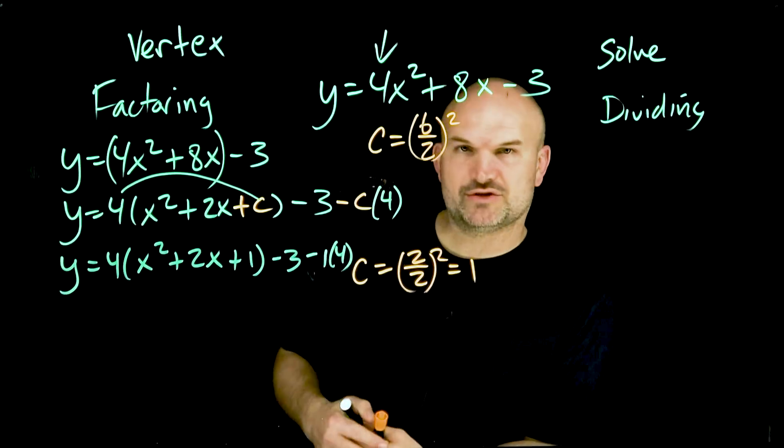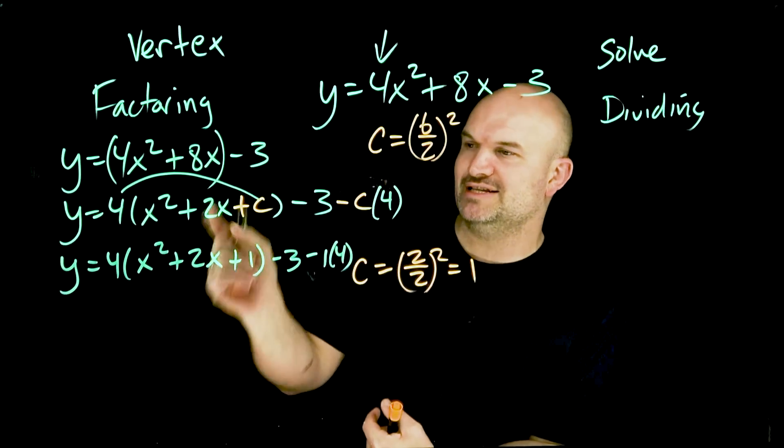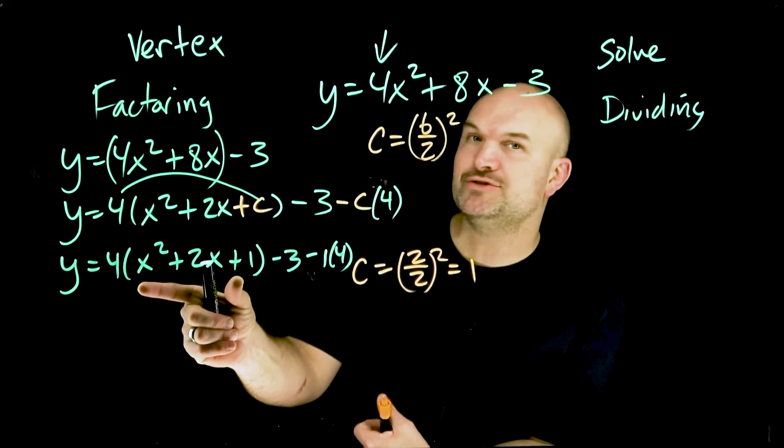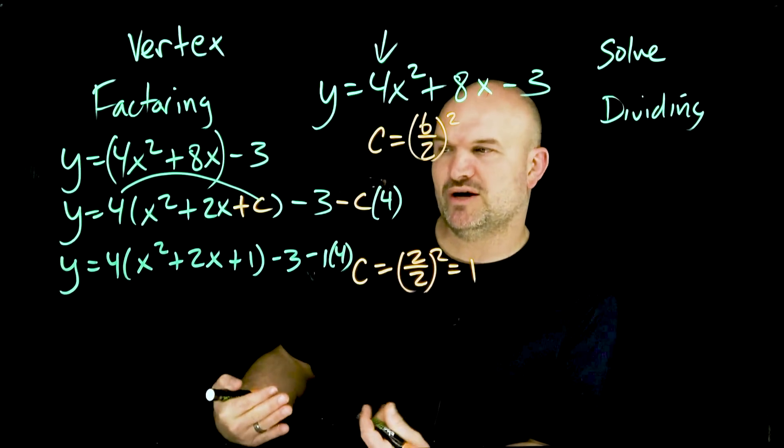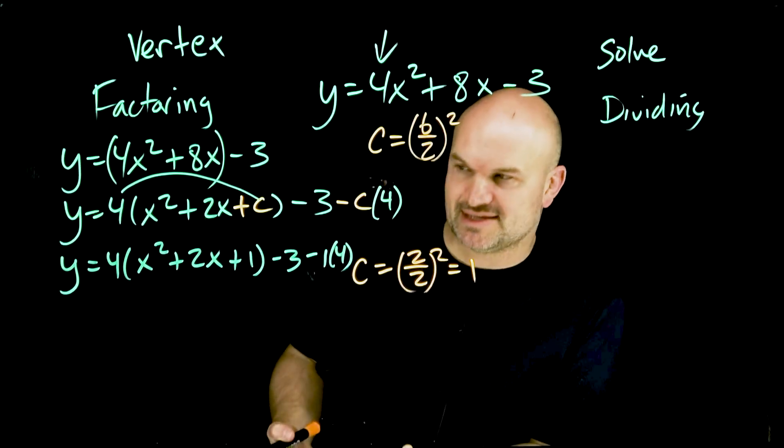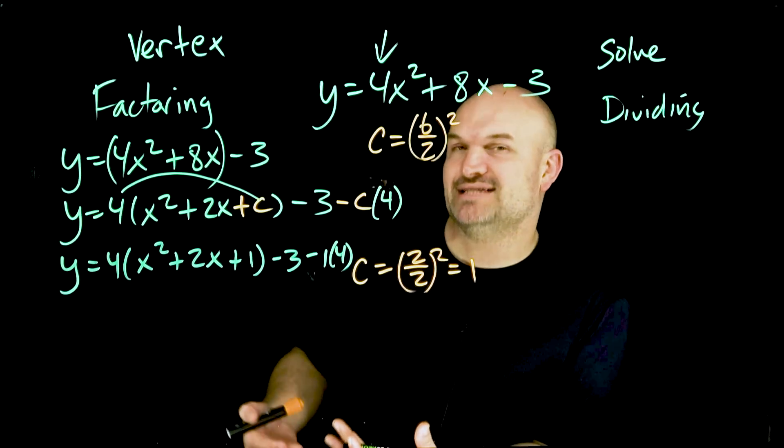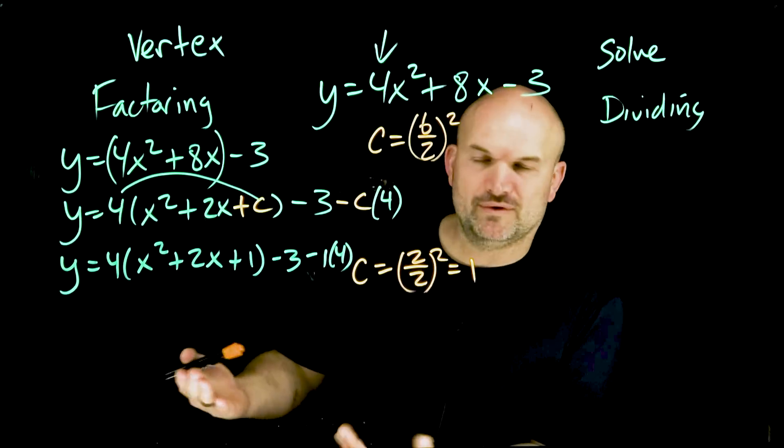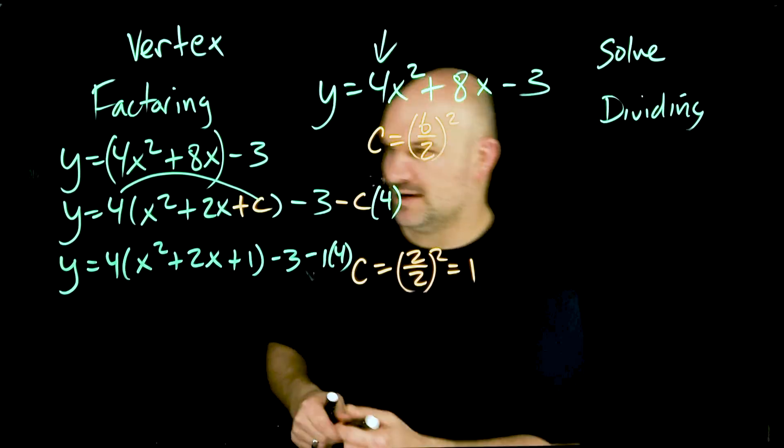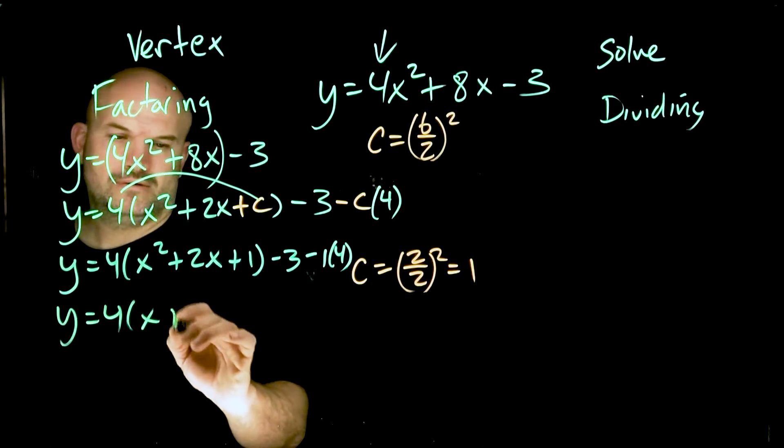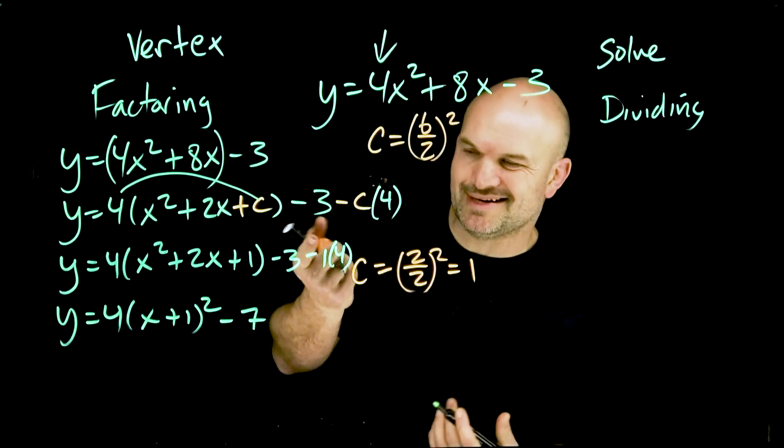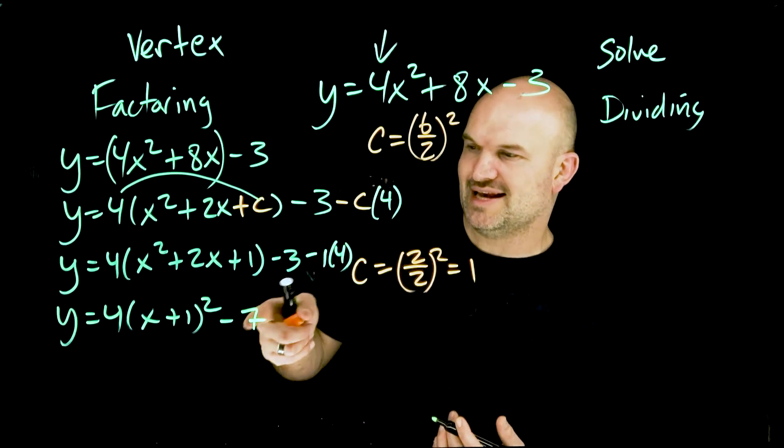So c in this case is 2 divided by 2 quantity squared. Well, 2 divided by 2 is 1. 1 squared equals 1. That is my value c. Now we have our one, so I'm going to replace my c's with ones. Now the next thing about completing the square is once you find your value c and add it in, we know that this is a perfect square trinomial. We know this can be factored down into a binomial squared.